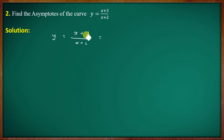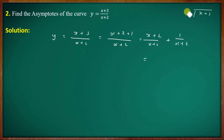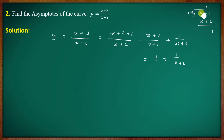For the function y equal to x plus 3 by x plus 2, we rewrite the numerator. The denominator is x plus 2 and x plus 3 equals x plus 2 plus 1. So y equals x plus 2 divided by x plus 2 plus 1 divided by x plus 2, which simplifies to 1 plus 1 by x plus 2.